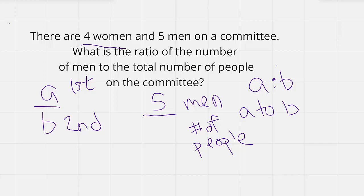Four plus five is nine. So there's nine total people on the committee, five of them being men. So our ratio is the fraction five over nine.